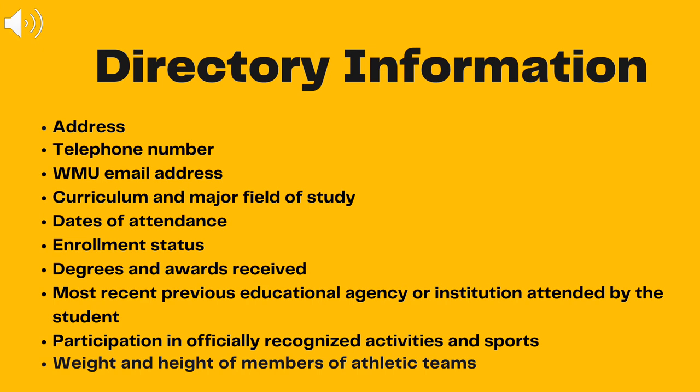Directory Information. Western Michigan University, in accordance with FERPA, has designated the following categories of information about individual students as directory information: name, address, telephone number, WMU email address, curriculum and major field of study, dates of attendance, enrollment status, degrees and awards received, most recent previous educational agency or institution attended by the student, participation in officially recognized activities and sports, and weight and height of members of athletic teams.